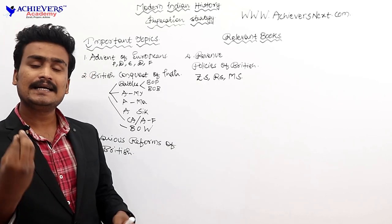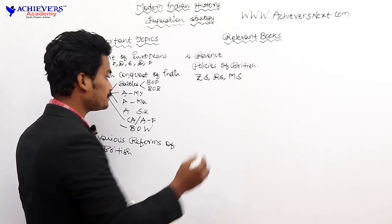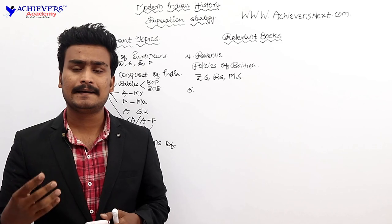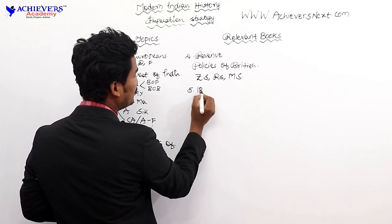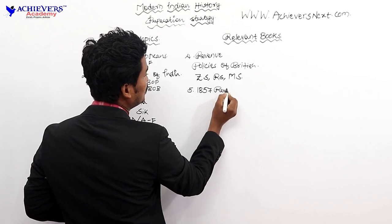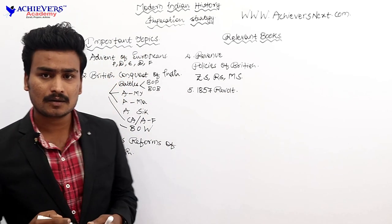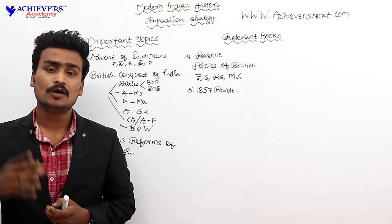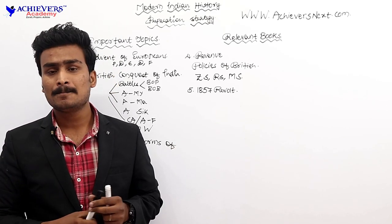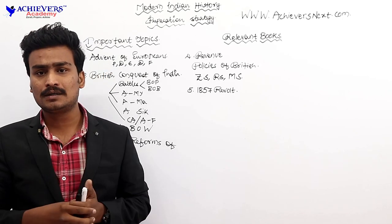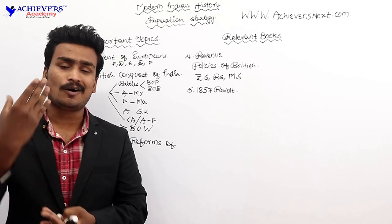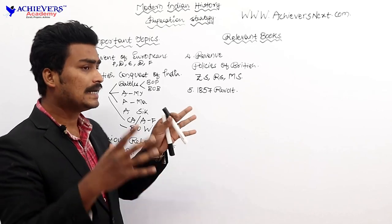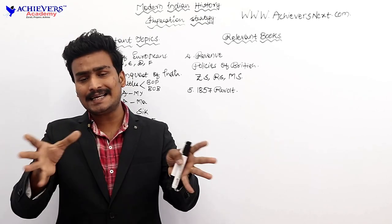The fifth important topic is the Revolt of 1857. This is very important. We must study: what were the causes of this revolt, who were the leaders who participated, who were the British officers related to it, what were the strong centers of this revolt, what was the immediate cause, and what were the consequences.